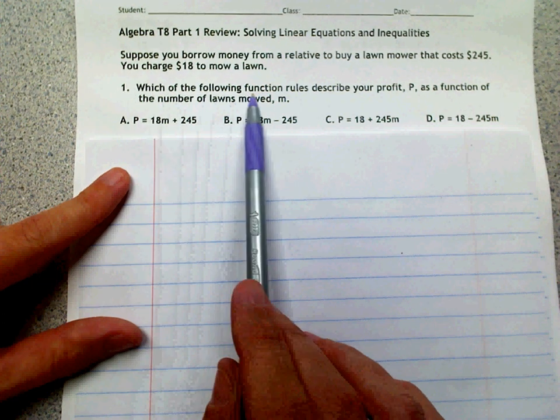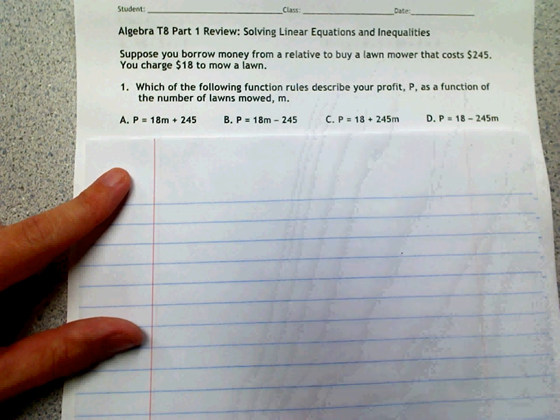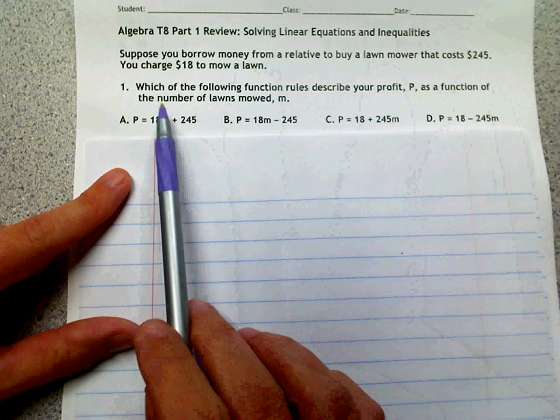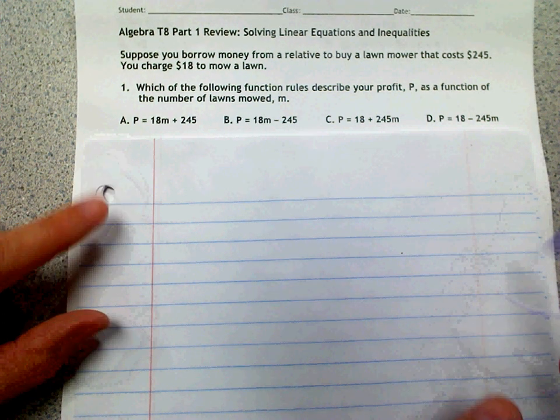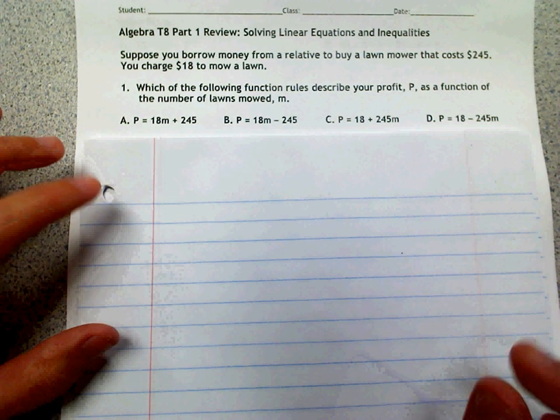Number one says, which of the following function rules describe your profit as a function of the number of lawns mowed, which is M. So P is your profit, M is how many lawns that you've mowed.